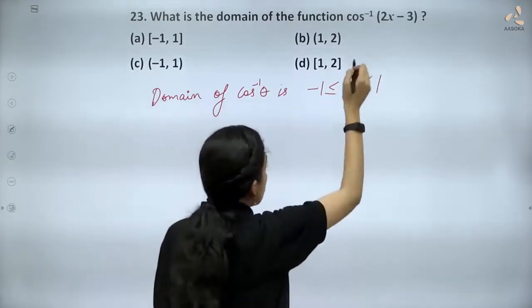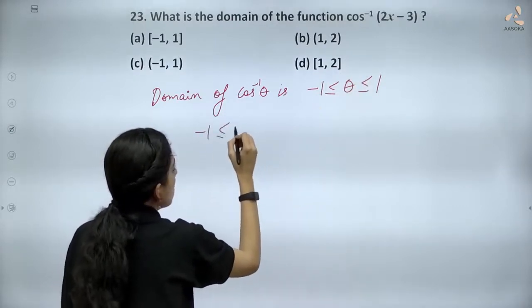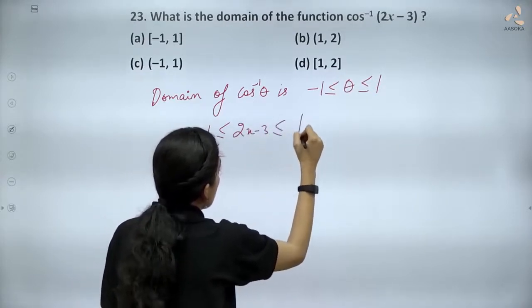So here theta is 2x minus 3. The domain will be minus 1 less than equal to 2x minus 3 less than equal to 1.